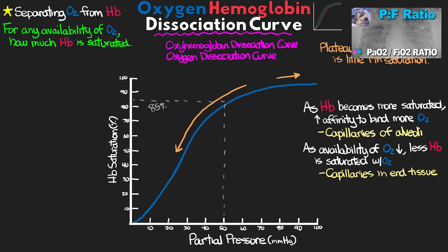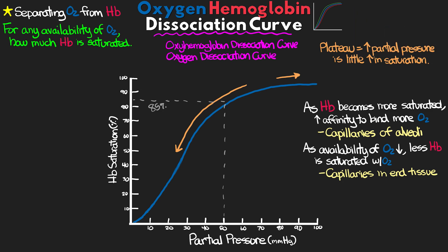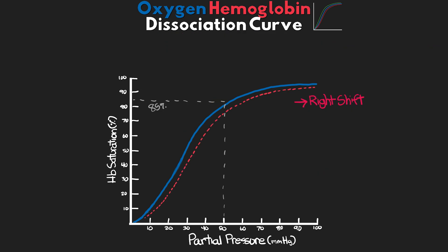We can have shifts in our body's physiology that alter this curve, and we call these either a right shift or a left shift. A right shift means that hemoglobin will have less of an affinity for oxygen and will unload oxygen more easily. Looking at our example of a PaO2 of 50 mmHg — normally we'd expect 85% saturation — but with a right shift, we see somewhere around 75% saturation. So for the same given amount of oxygen availability, we're going to have less bound in hemoglobin, and thus more available to be used.